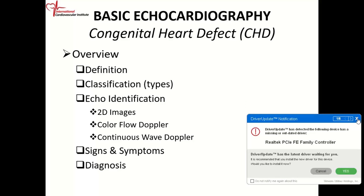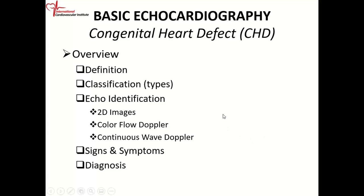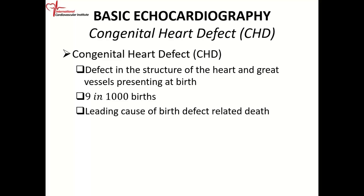What you're interested in are the ECHO features. You need to have a concept in your brain of what the different types of congenital defects look like. When we say congenital heart defect or congenital heart disease, we're talking about a defect in the structure of the heart and great vessels — the large blood vessels which enter the heart or take blood to or from the heart. This is a fairly common problem, occurring in about nine in a thousand births.